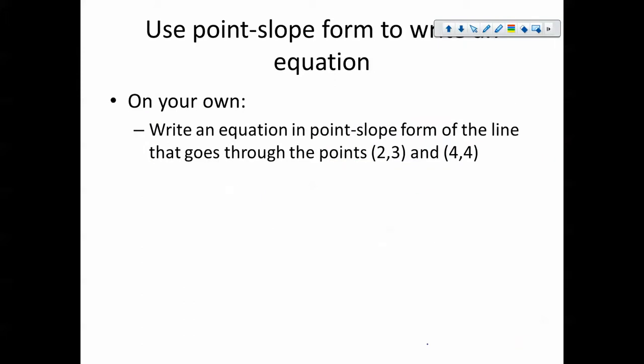Alright, let's do this last problem together. M equals our slope. We're going through two points (2,3) and (4,4), so we're not given the slope. We need to use our slope formula to find it.